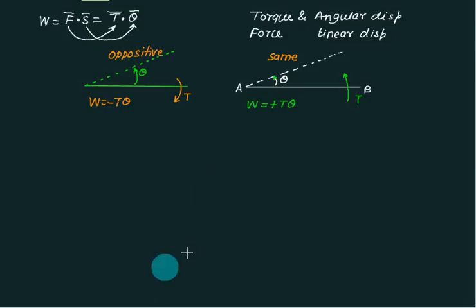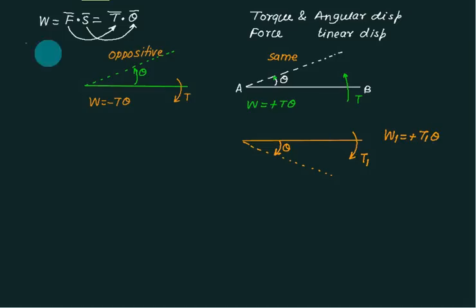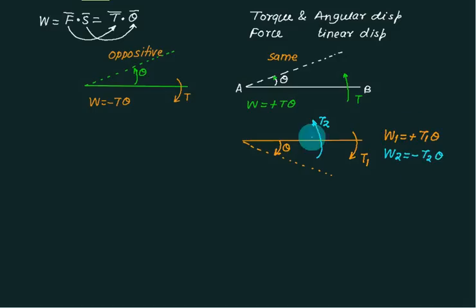We are not claiming clockwise or anticlockwise specifically — what we are claiming is whether the directions are the same or opposite. For example, if a bar rotates anticlockwise and torque T1 is also anticlockwise, work done by T1 is positive: W1 = +T1·θ. If another torque T2 acts clockwise on the same bar, then W2 = -T2·θ. Same direction means positive, opposite means negative.